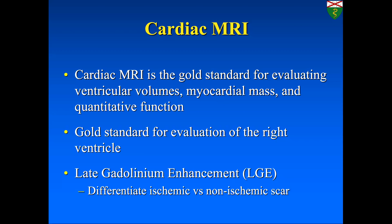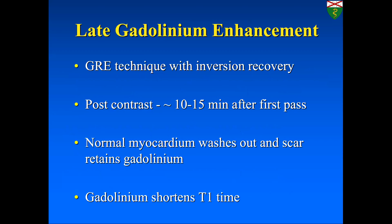MRI makes the diagnosis of cardiomyopathy by looking at the size and function of the ventricles. It delineates the etiology and extent of disease, has prognostic value, and allows sequential follow-up. Late gadolinium enhancement is a gradient echo technique with an inversion recovery pulse, performed 10–15 minutes after first-pass perfusion injection of gadolinium. Normal myocardium washes out, while scar or abnormal myocardium retains gadolinium because gadolinium shortens T1. Gadolinium is an extracellular medium and does not affect intact myocardial cells, but when there is cell death or disruption of the membrane, or anything that increases the extracellular space, gadolinium gets inside.